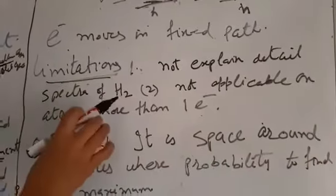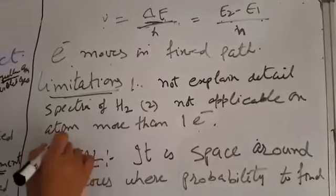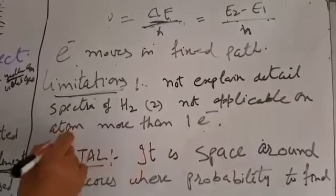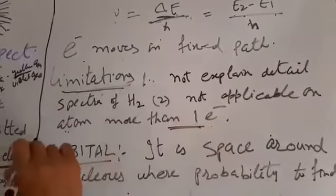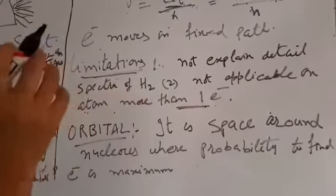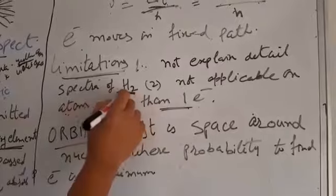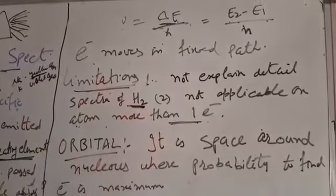First one is: not applicable when the number of electrons of any atom is more than 1. And it does not explain the detailed spectra of hydrogen. These are the limitations of Bohr's model.